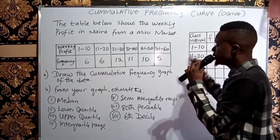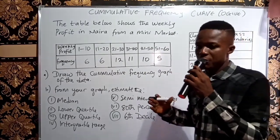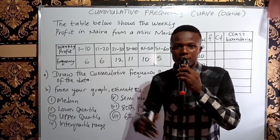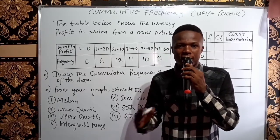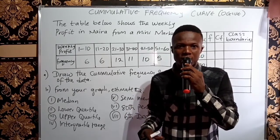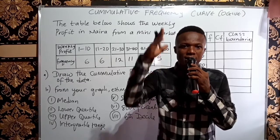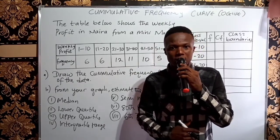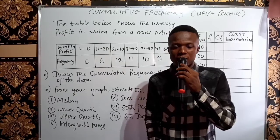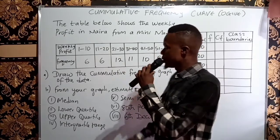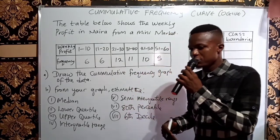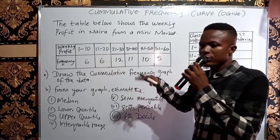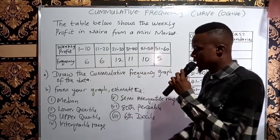The Ogive is just a graph whereby the cumulative frequency of a group of data is plotted against the upper class boundary. So the cumulative frequency stays at the vertical axis while the upper class boundary stays at the horizontal axis. We are going to learn this cumulative frequency curve in this video using the example here.